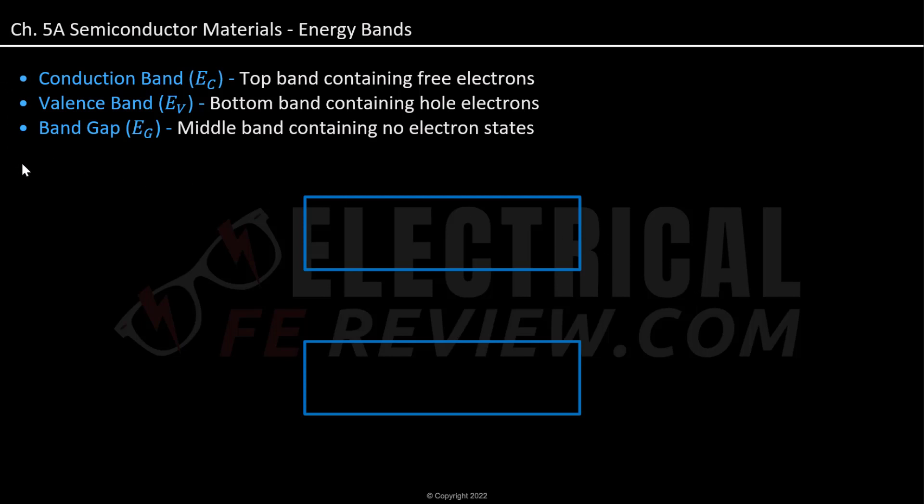We have three different types of energy bands. Starting off, our top band is our conduction band, denoted as EC, and it contains free electrons. Our bottom band, which is our valence band, denoted as EV, contains hole electrons. And our middle band, which is our band gap, denoted as EG, contains no electron states.